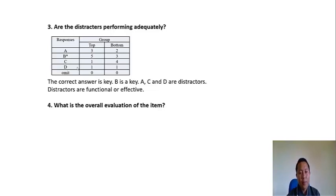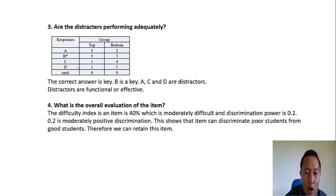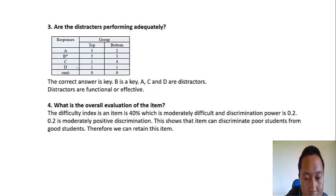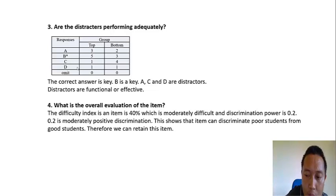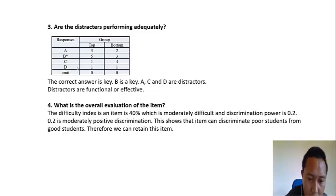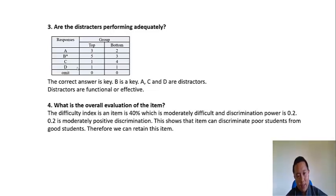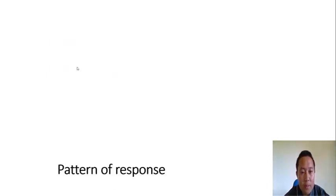The last question is: what is your overall evaluation of the item? Since the difficulty index is 40 percent (moderately difficult) and the discrimination power D = 0.2 (moderately positive discrimination), we can say that this item is good and we can retain it.